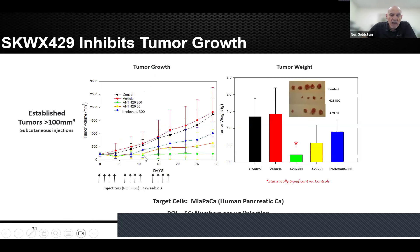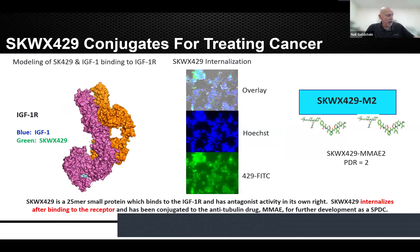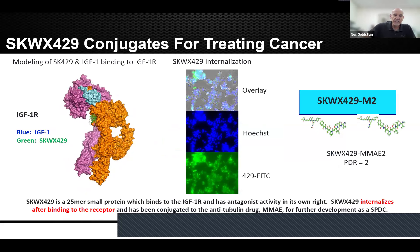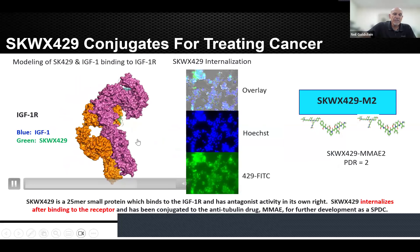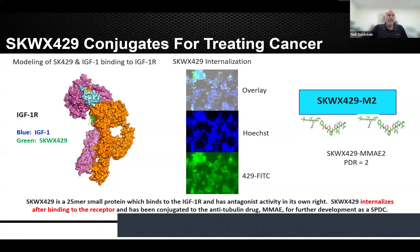I draw your attention to the green line at the bottom — we showed that giving four injections per week for three weeks of the peptide alone can significantly inhibit tumor growth. On the right you can see the tumor appearance at 12 mg/kg, and looking at tumor weights at the end, there is significant inhibition versus controls and the irrelevant small protein. We decided to take peptide 429 — which targets a tumor-associated antigen — and make it into a drug conjugate. The circling animation shows where 429 binds in green and where IGF binds, suggesting an allosteric effect since 429 binds close to but not within the IGF binding site.